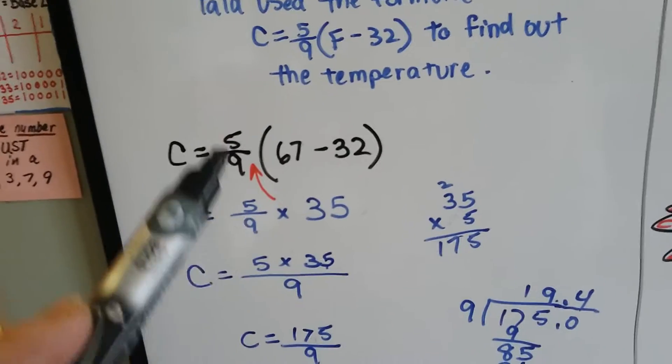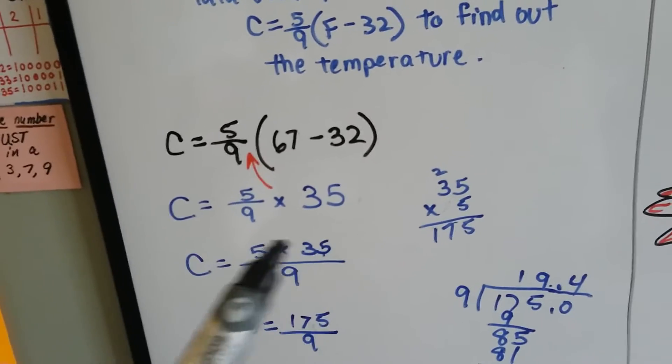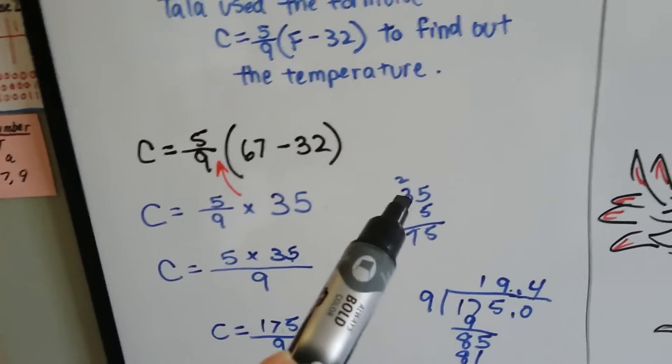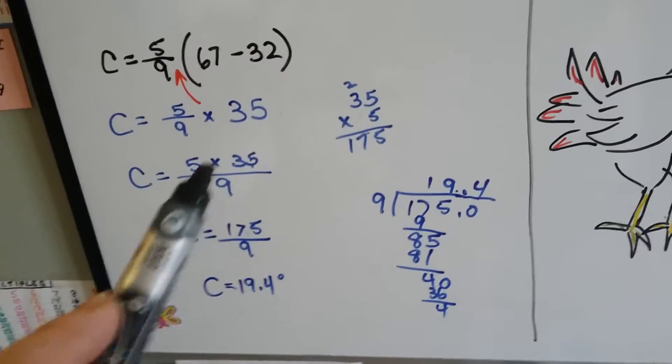Now we need to multiply it by 5 ninths. So we put the whole thing like this, 5 times 35 over 9. 35 times 5 is 175. Now we divide it by 9, because that's a fraction, it means division.